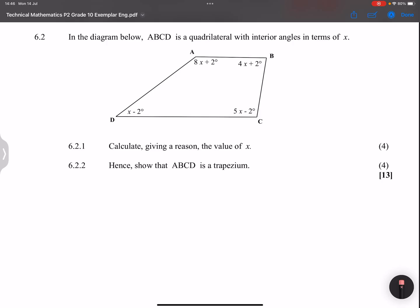Now, they're telling us that calculate, giving a reason, the value of x. So we've got the interior angles of this. Now, there are two ways in which we could do that. So, firstly, in this quadrilateral that we are given, we always know that the sum of our interior angles should give us 360.